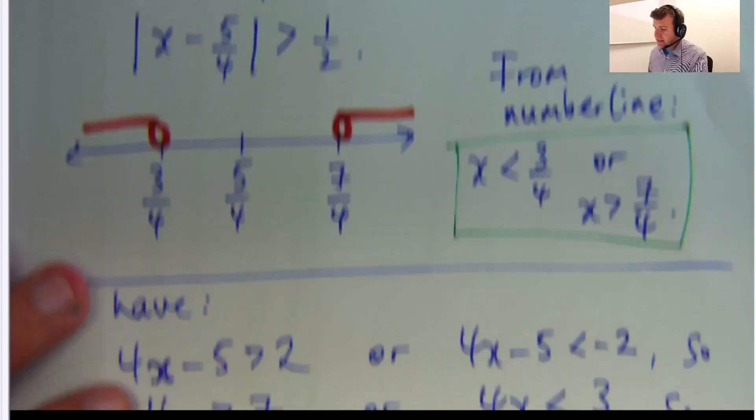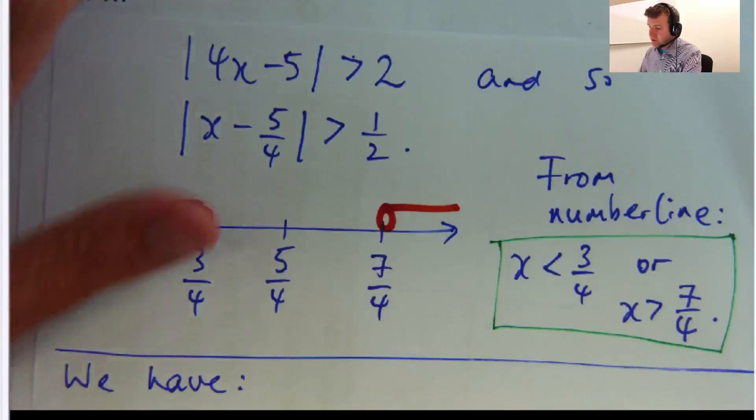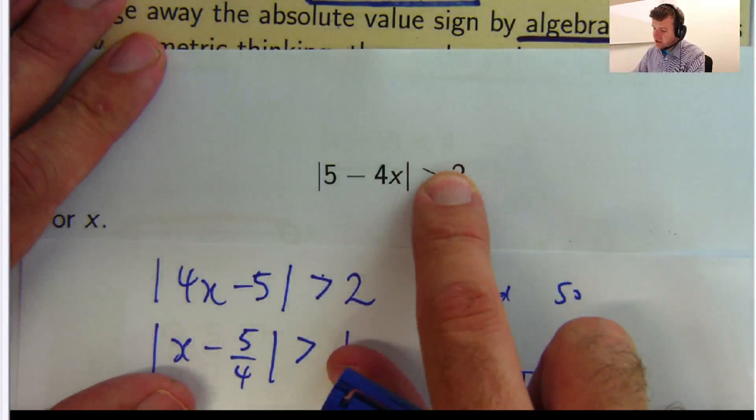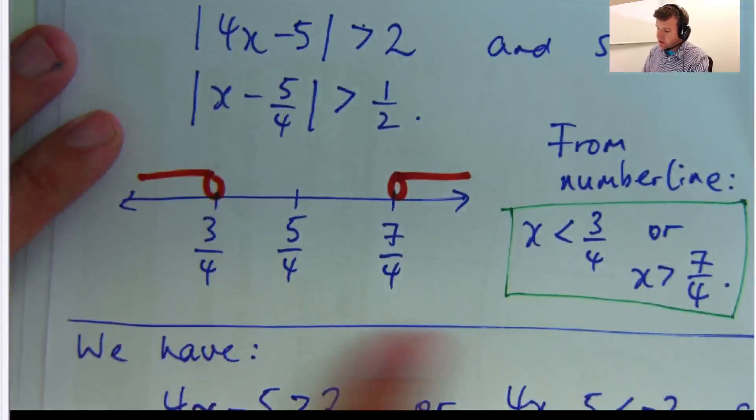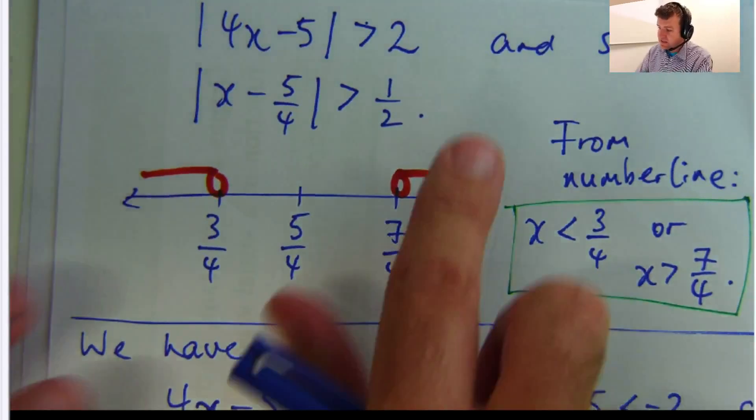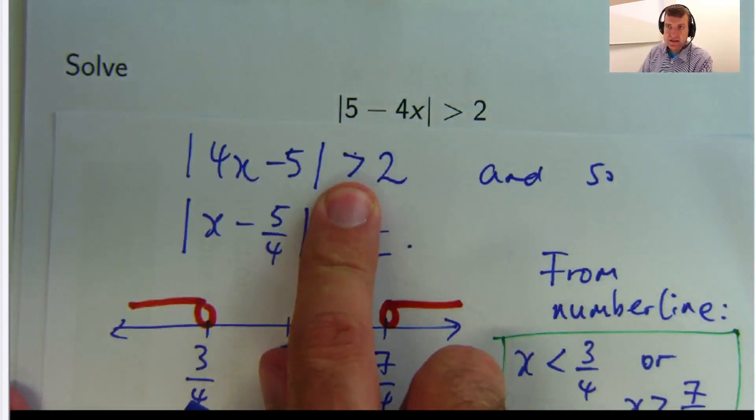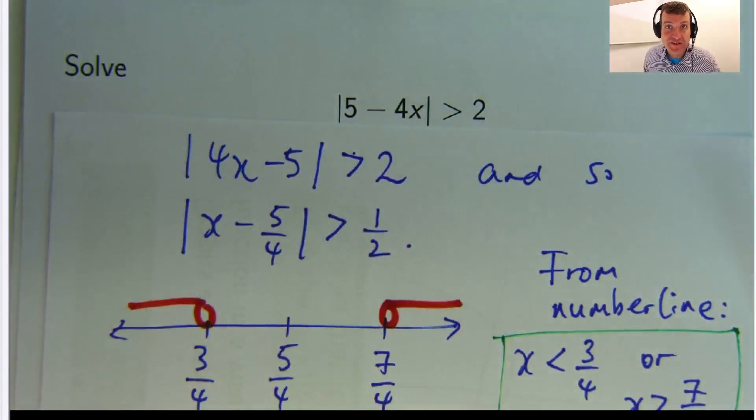Okay. Now, in some other questions, if that was less than 2 here, you could combine this as one inequality. Okay, but you can't do it if you've got the greater than. Okay, why? Well, I will leave you with that question.